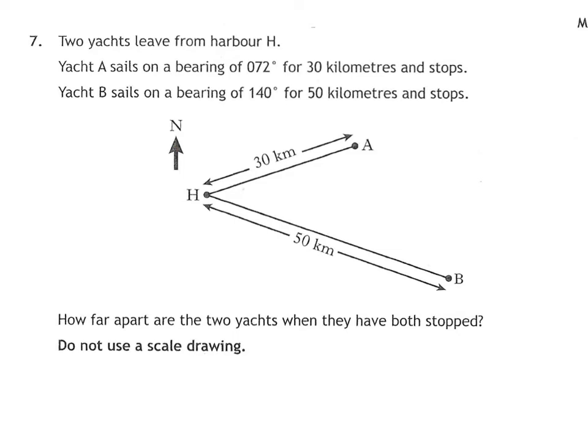Question seven, we have two yachts leaving on two different bearings. We have to find out how far apart they are. I'm going to put my north line here. Sailor A goes on a bearing of 72, so this angle here is 72. Sailor B goes on a bearing of 140, so this angle is 140. But I want this bit in here, so I need to do 140 take away 72, which is 68. That's the angle I'm using, the 68.